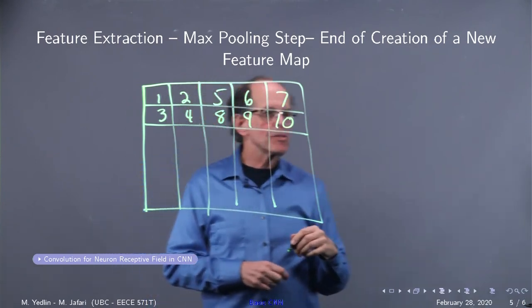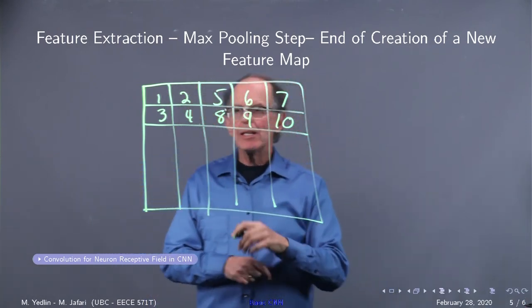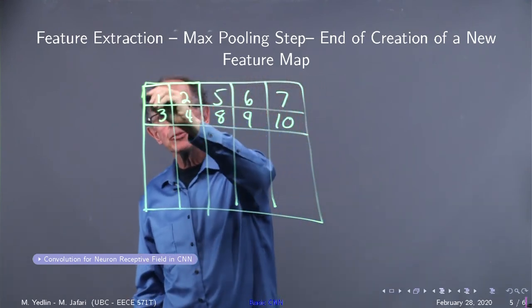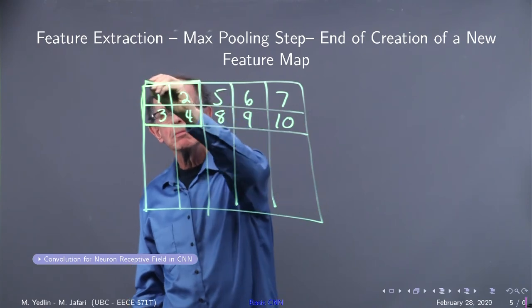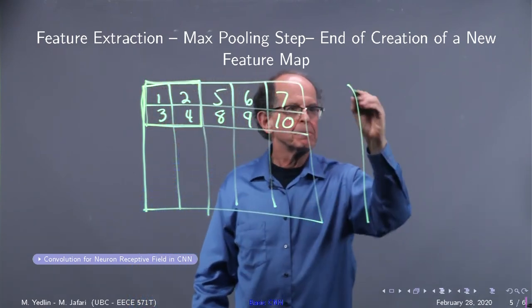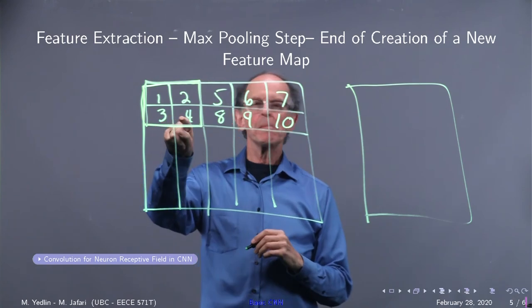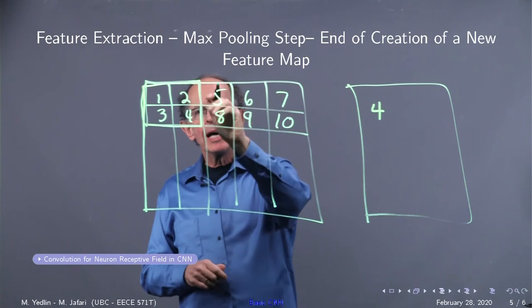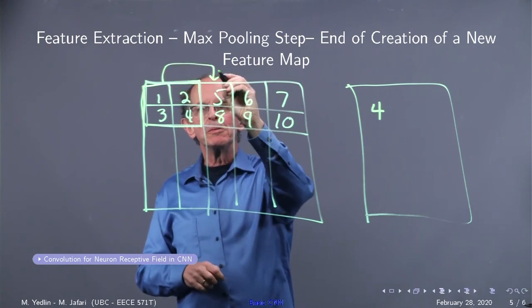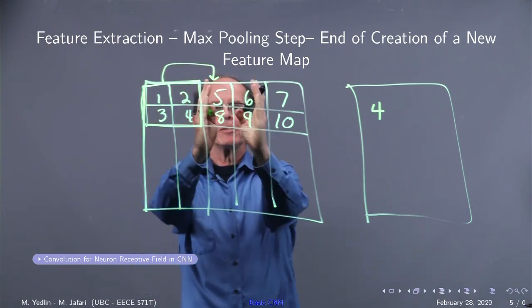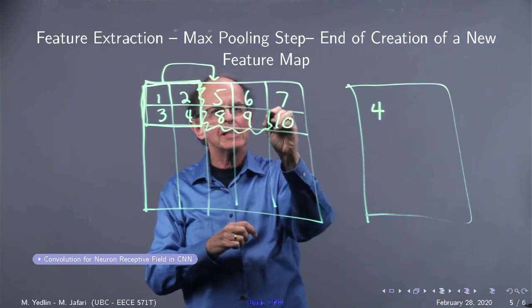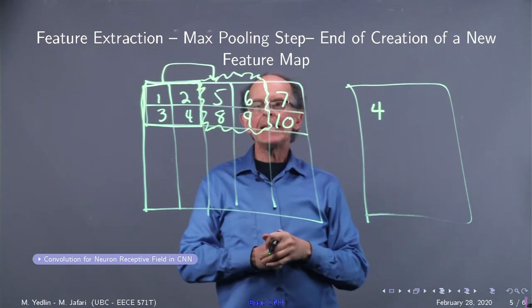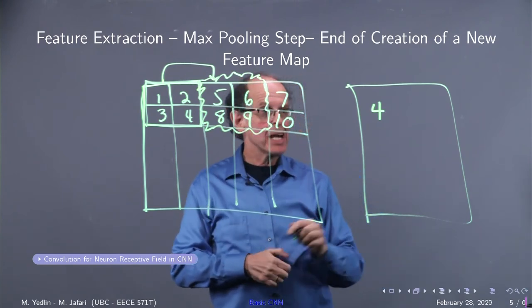The way the max pooling works is for each planar result that we have, we take a two-by-two window and what's the maximum of this? Four. We slide the window over by two. So we slide over to this window. I'll do it like that. And that's five, six, eight, nine. So the maximum of that is nine.